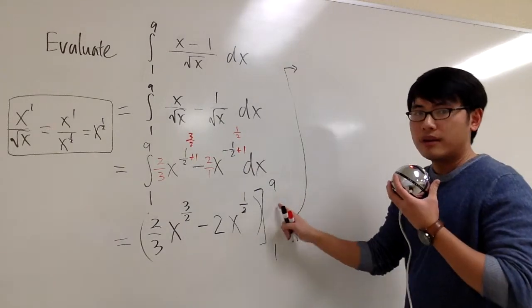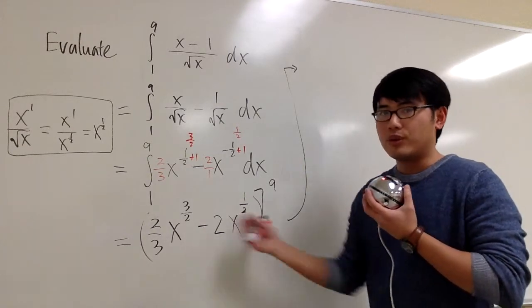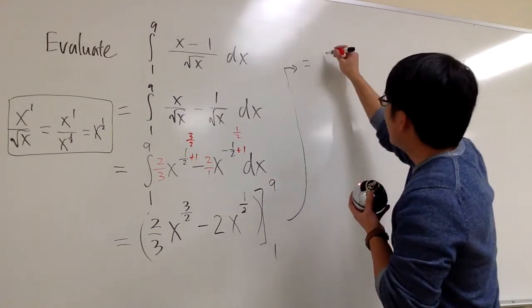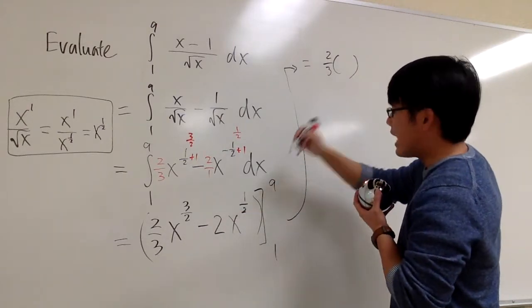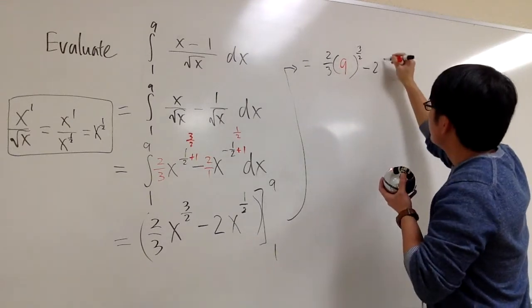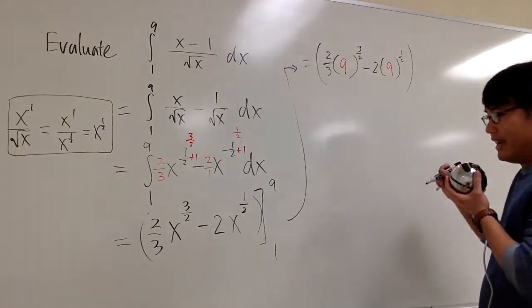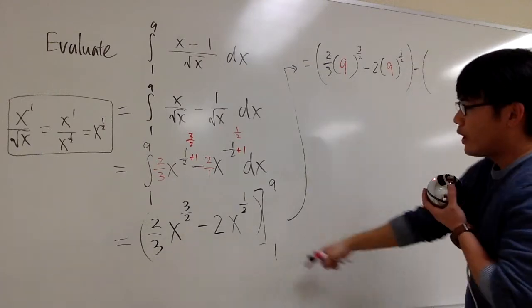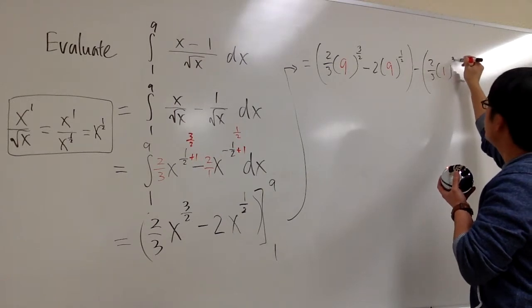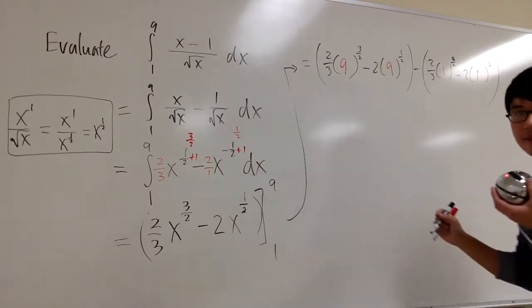And I'll continue right here. Next step is, we are going to plug in one, plug in nine into all the x's. And then we are going to subtract when we plug in one into all these x's. First part, plug in nine into all these x's. We have two-thirds and nine inside of the parentheses raised to the three-half power. Minus two times nine to the one-half. That's the first part. I will have to subtract. Plug in one to all these x's. We have two-thirds times one to the three-half. Minus two times one to the one-half.